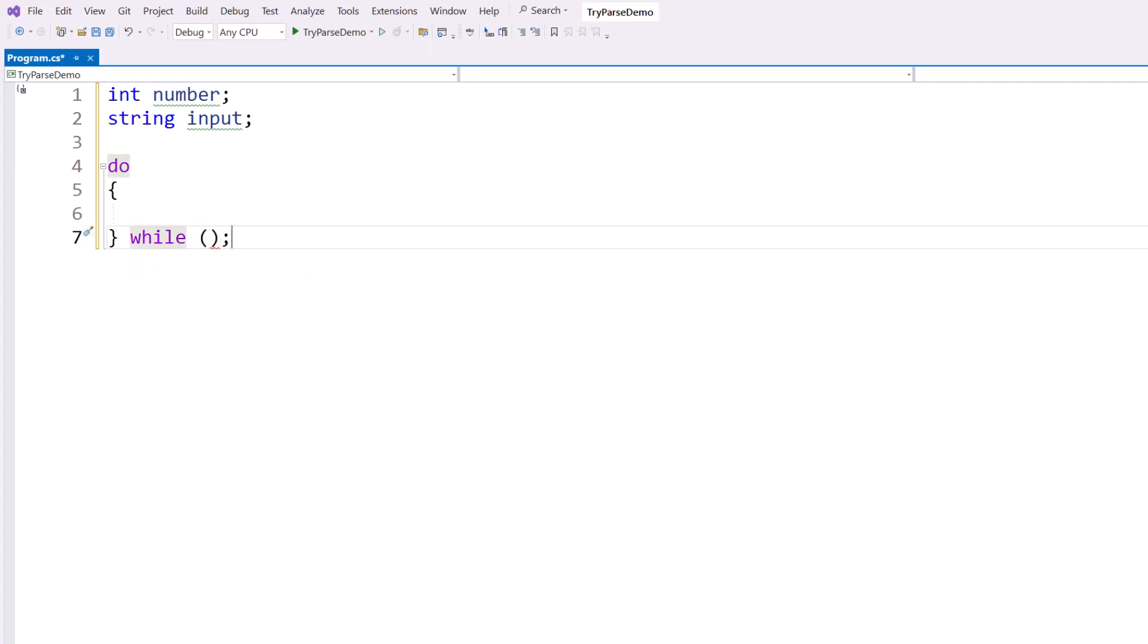and then I'm going to say while and this is where I would put my condition. Now something that a lot of programmers will do in situations like this where I want to decide when to break the loop, they'll just put true in here. And now this loop will run forever until I execute a break statement.